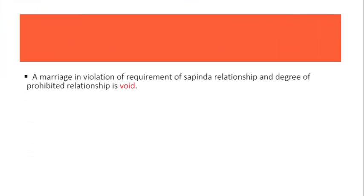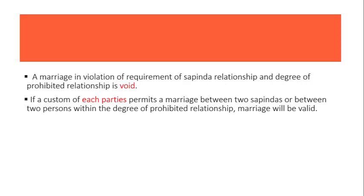A marriage in violation of the requirement of sapinda relationship and degree of prohibited relationship is void. However, if a custom of each party permits a marriage between two sapindas or within the degree of prohibited relationship, then only the marriage will be valid. Dono hi parties ke customs agar allow karte hain, tabhi valid hoga. Agar kisi ek party ke bhi custom mein allowed nahi hai, then the marriage will be void. This point was established in the case of K. Kamalakshi versus Money.